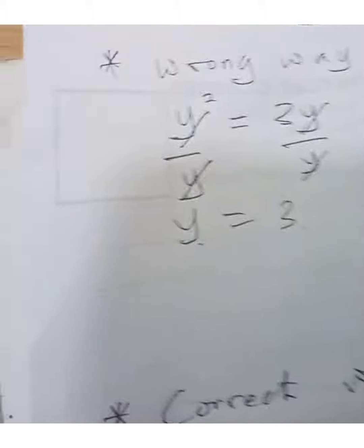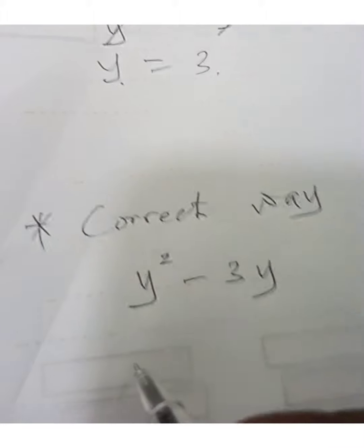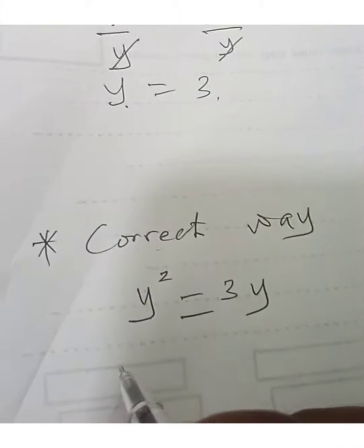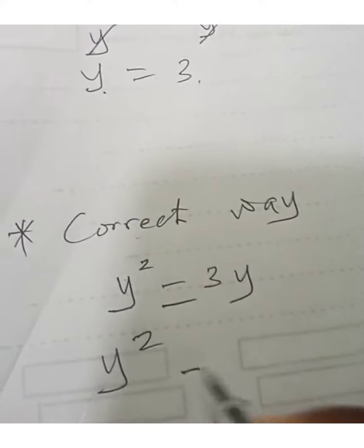That might be correct but let's see the correct way. In the correct way, since we have y squared equals 3y, we're going to have y squared minus 3y equals 0.